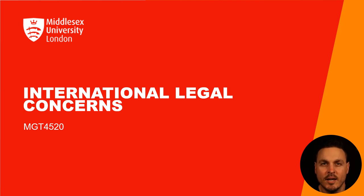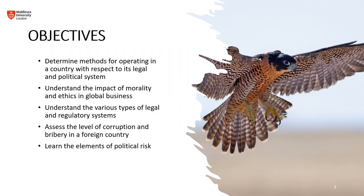Hi everyone and welcome back to MGT4520. Today we are going to be discussing international legal concerns. The objectives set out for today are to determine methods for operating in a country with respect to its legal and political system, understand the impact of morality and ethics in global business, understand the various types of legal and regulatory systems, as well as assess the level of corruption and bribery in a foreign country. This leads to learning the elements of political risk.